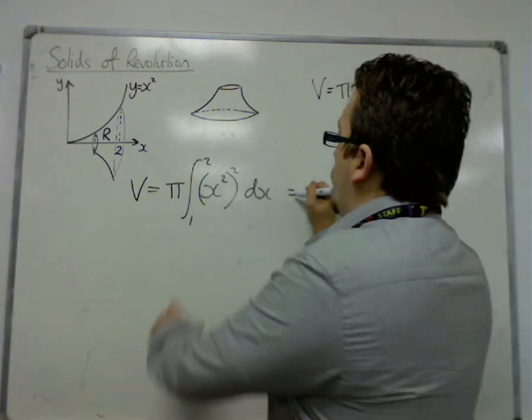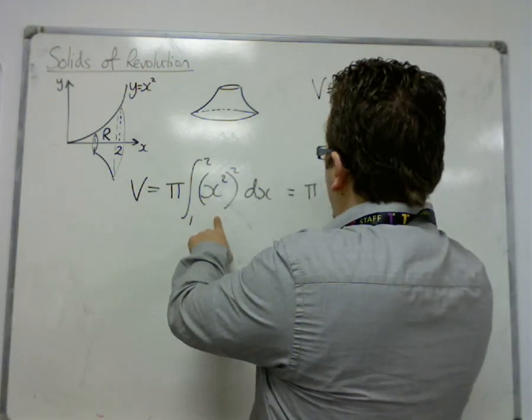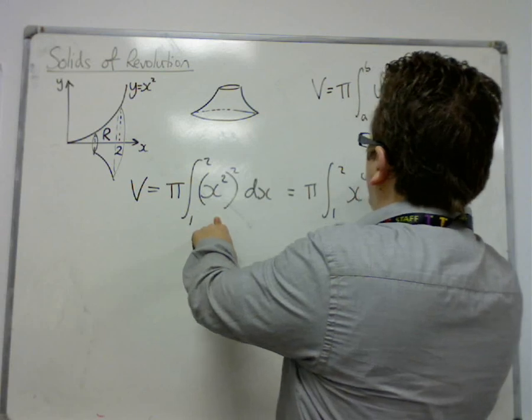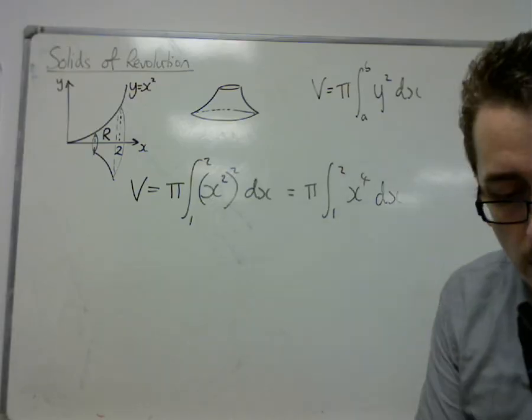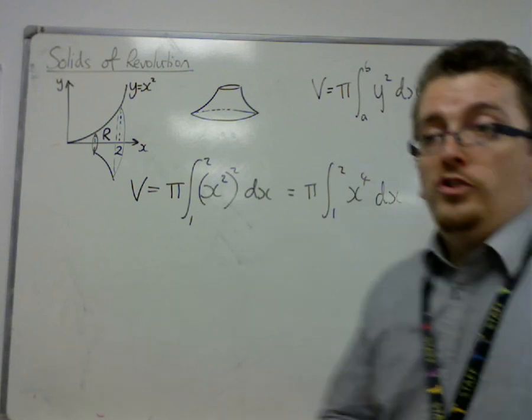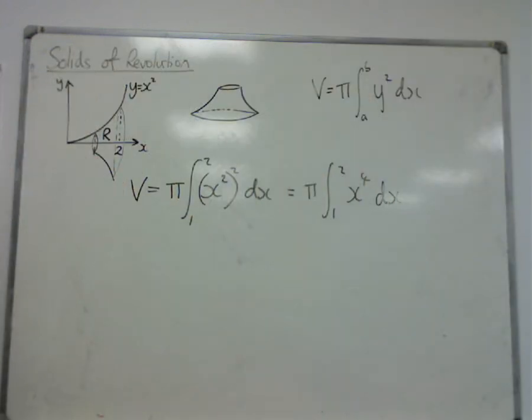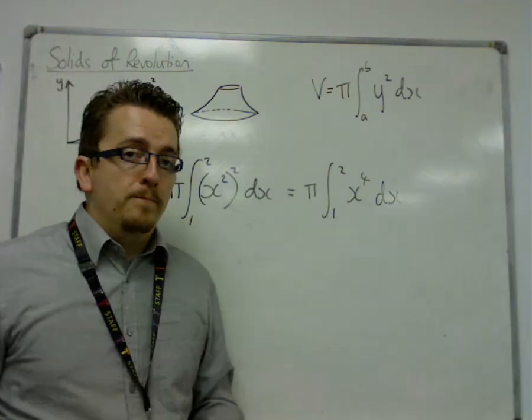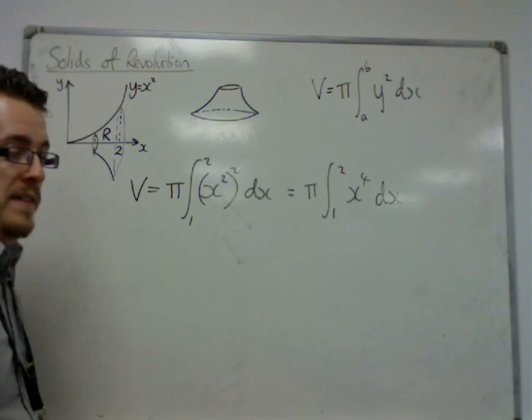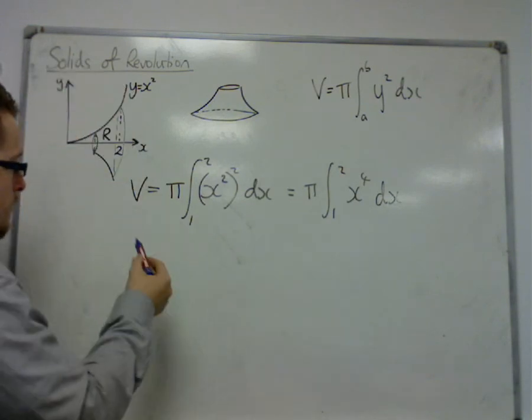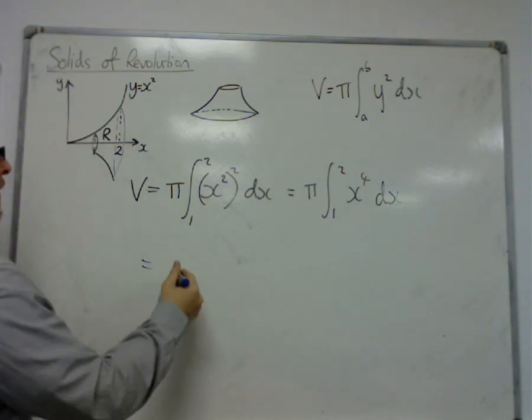So, obviously, x² squared is x⁴, so we can write that, like so. So, then we can actually do some integrating. That's one of the key mistakes that our students make, is that we manage to put it into the integral, and then forget to integrate, which seems surprising.